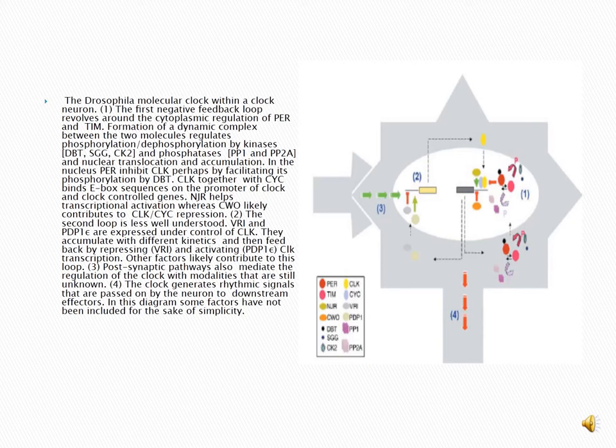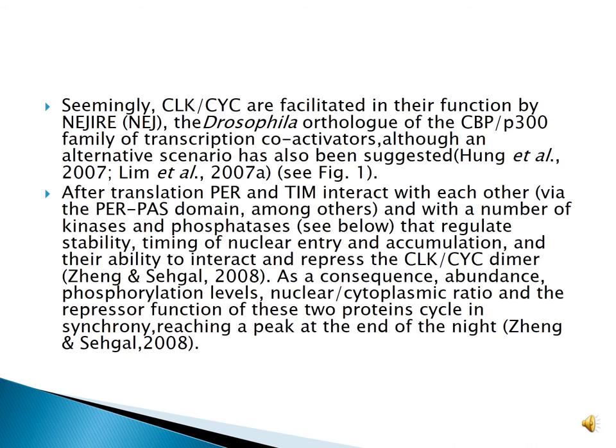This is a structure of the Drosophila molecular clock within a clock neuron, showing the feedback systems and post-synaptic pathways. All mechanisms of action are detailed in this picture. Please pause the video and go through it. Seemingly CLK and CYC are facilitated in their function by Nejire, the Drosophila ortholog of the CBP/p300 family of transcription co-activators, although an alternative scenario has also been presented.